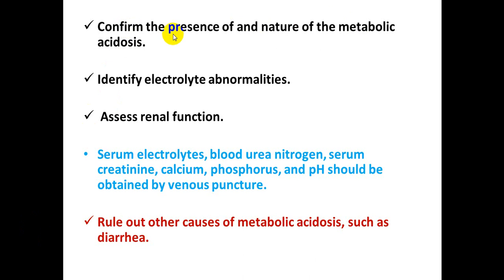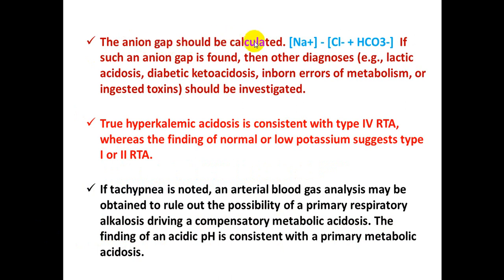Confirm metabolic acidosis, identify electrolyte abnormalities, and assess renal function by measuring serum electrolytes, blood urea nitrogen, serum creatinine, serum calcium, serum phosphorus, and pH. Rule out other causes of metabolic acidosis such as diarrhea. Calculate the anion gap — it should be normal. If the anion gap is more than 20, other diagnoses such as lactic acidosis, diabetic ketoacidosis, inborn errors of metabolism, or ingested toxins should be considered.